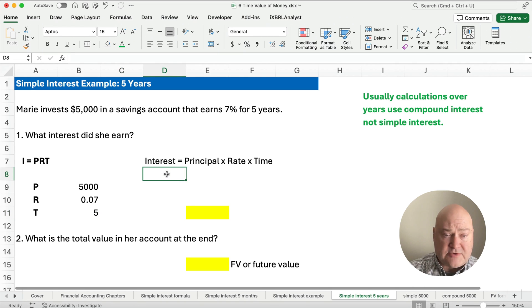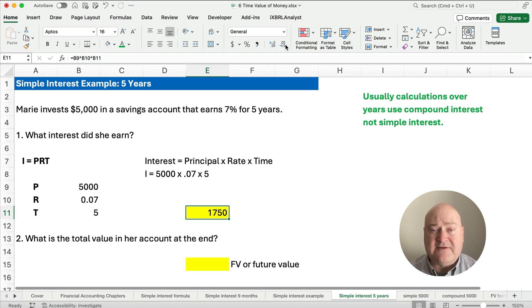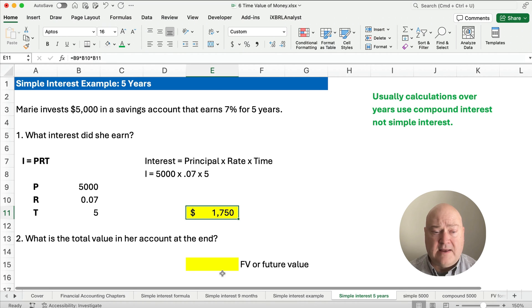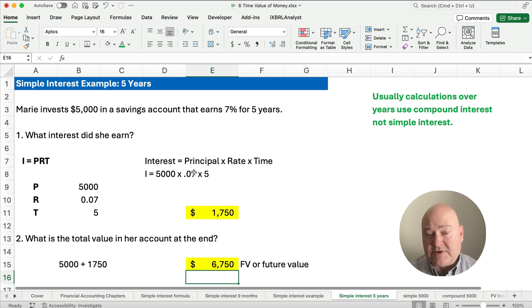We're going to have interest or I equals $5,000 times .07 times five years. So how much interest does Marie earn? It's going to be $5,000 times the seven percent times the five years. We don't need a fraction because this is a full year. The interest rate is already at an annual rate, and so we just multiply it times five. So the amount is going to be $1,750. What's the total in her account at the end of five years? It's going to be $5,000 plus this $1,750, so that's $6,750. That's how we do the simple interest for multiple years.